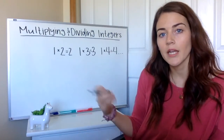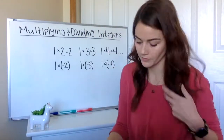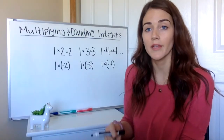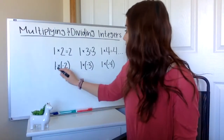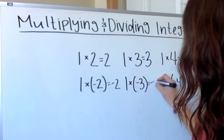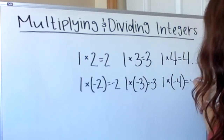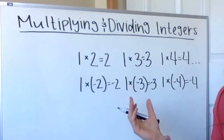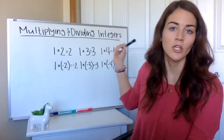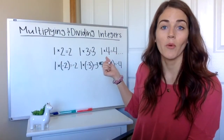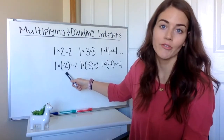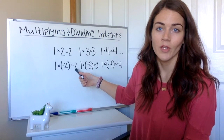What if we multiply a negative by one? The identity property tells us if we take anything times one it's just itself. So one times negative two is negative two, one times negative three is negative three, one times negative four is negative four. So you can see when you have a positive times a positive, you get a positive. However, if you have a positive times a negative, you're getting a negative.